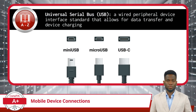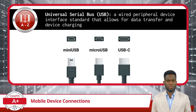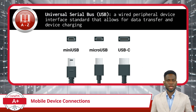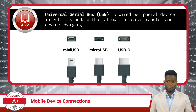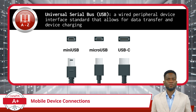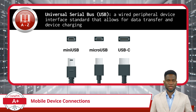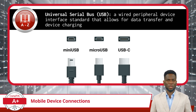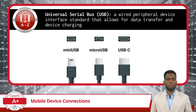Let's begin with USB, or Universal Serial Bus connections. USB is a wired peripheral device interface standard that allows for data transfer and device charging, and the ports come in several form factors. Some of the most common form factors for mobile devices include USB-C, micro-USB, and mini-USB.